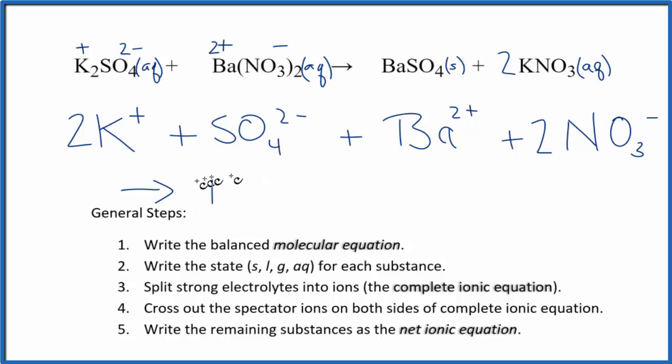We'll just write BaSO4 plus, we had our plus for the potassium and negative for the nitrate. So we have two potassium ions and then two nitrate ions.